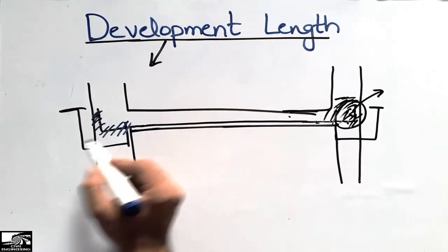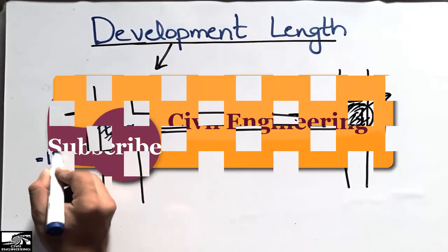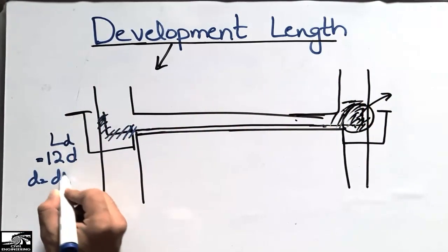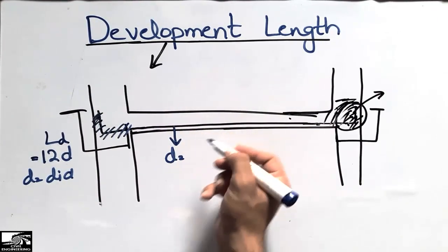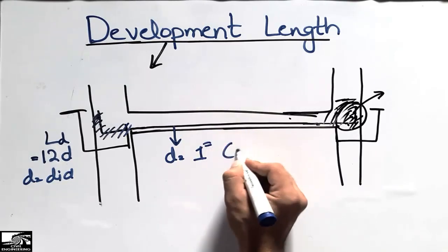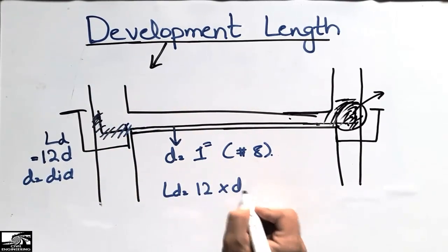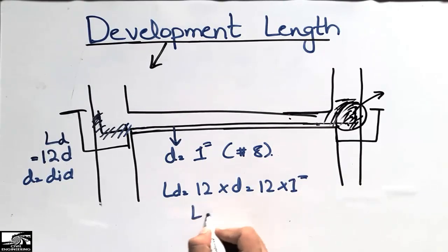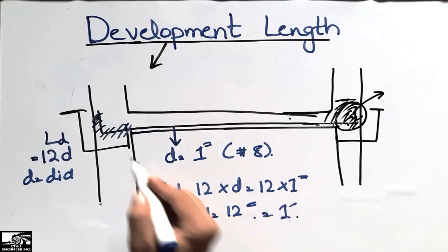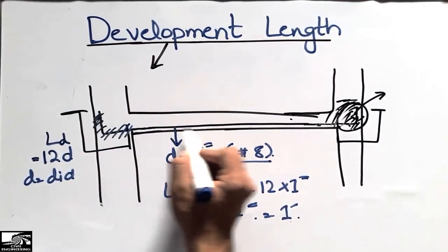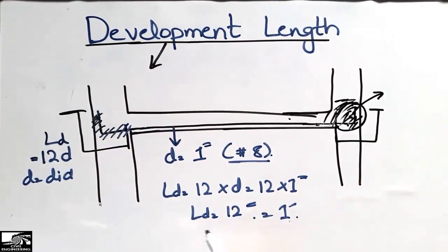This reinforcement bar is known as LD, the development length. Usually this length is taken as 12 times D, where D is the diameter of the bar. For example, using a number 8 bar with a diameter of 1 inch, the development length LD equals 12 times 1 inch, which equals 12 inches — or approximately 1 foot.